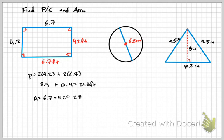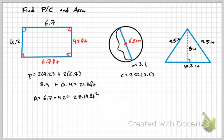For a circle with diameter 6.2, the radius is 3.1. The circumference is 2 × 3.14 × 3.1 = 19.5 centimeters. The area is π × r² = 3.14 × (3.1)² = 3.14 × 9.61 ≈ 30.2 square centimeters.